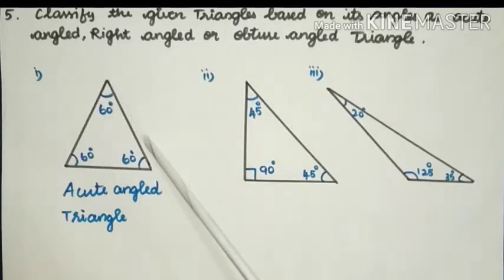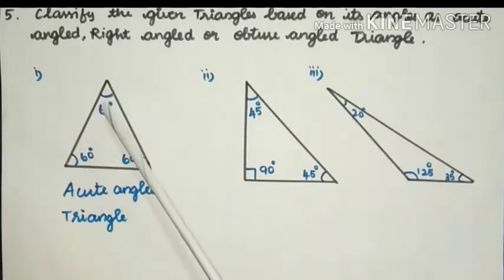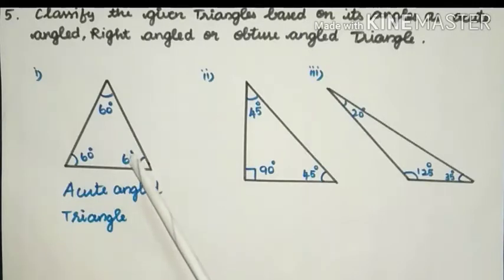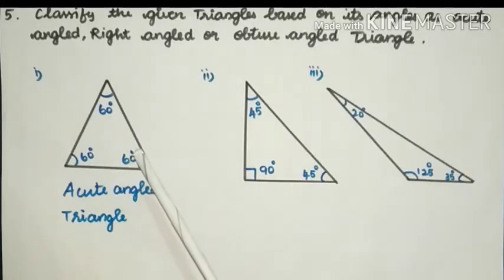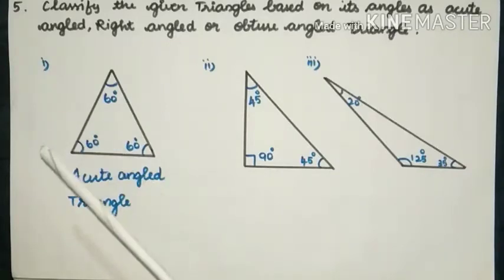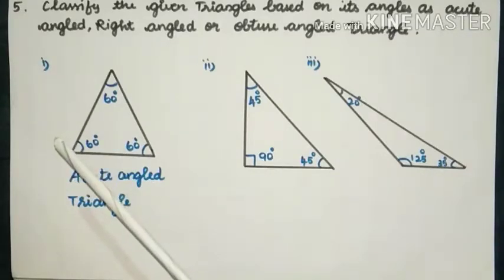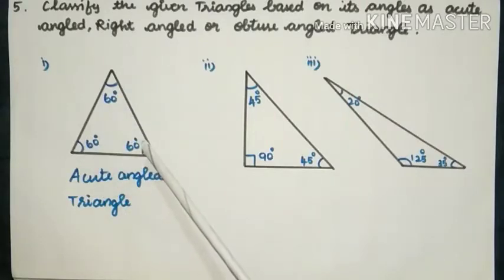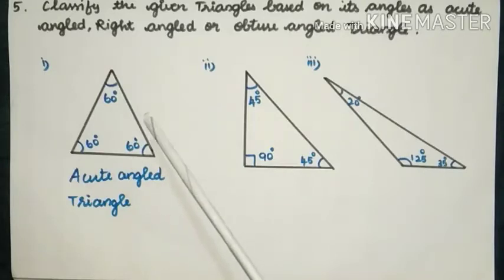First one: all three angles of the triangle are acute angles because they lie between 0° and 90°, so it is called an Acute Angled Triangle. Students, don't get confused — if all three sides are equal it is equilateral, but here the interior angles are all less than 90°, so it is an Acute Angled Triangle.